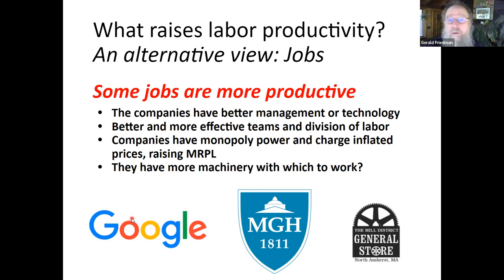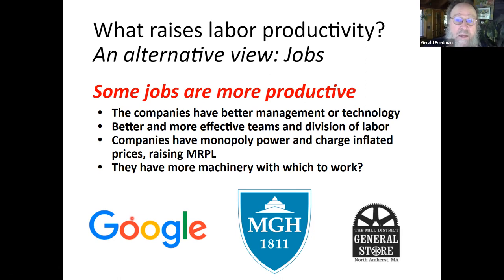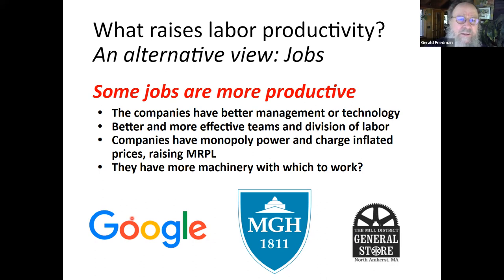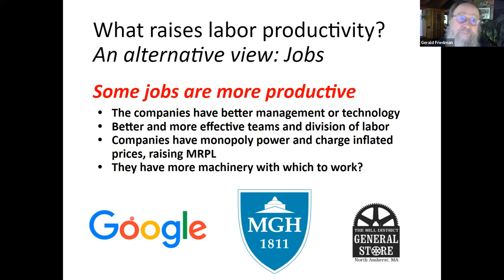What raises labor productivity in the alternative approach? Jobs — some jobs are more productive. These are jobs where maybe companies have monopoly power: Apple and Disney definitely have some monopoly power and can charge inflated prices. Wall Street firms have access to capital and finance that gives them a certain monopoly power. We'll talk about this more in a few lectures when we get to finance. Maybe these companies have better management, better technology — Pixar had better technology; Pixar is now owned by Disney, which ruined it. Better and more effective teams, more effective division of labor, more machinery with which to work.